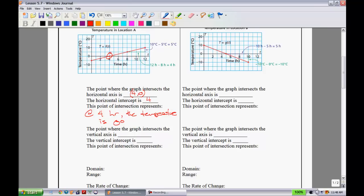Now what can we say about the point where the graph intersects the vertical axis? That would be this point right here. It looks to be at (0, -5). That means we have a vertical intercept at -5. What does that point mean? Well, that means the initial temperature right at time zero is -5.